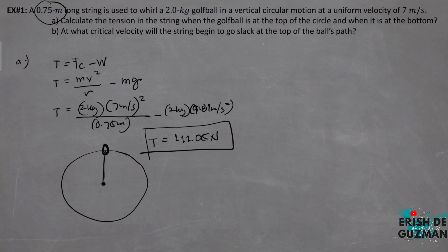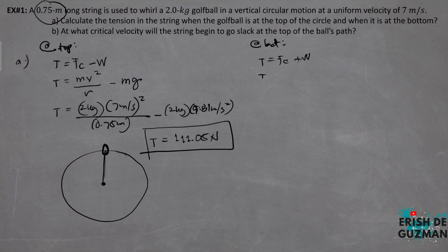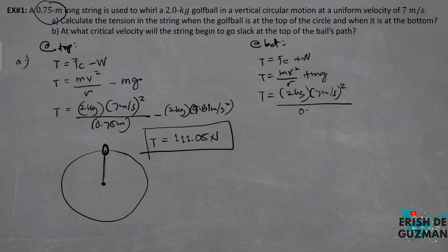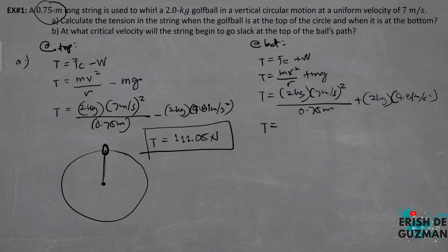At the bottom of the circular motion, tension equals centripetal force plus weight: tension equals mass times V squared over R, plus mass times gravity. We have 2 kg × (7 m/s)² / 0.75 m + 2 kg × 9.81 m/s². By calculating, the tension of the string when the golf ball is at the bottom is equal to 150.29 N.